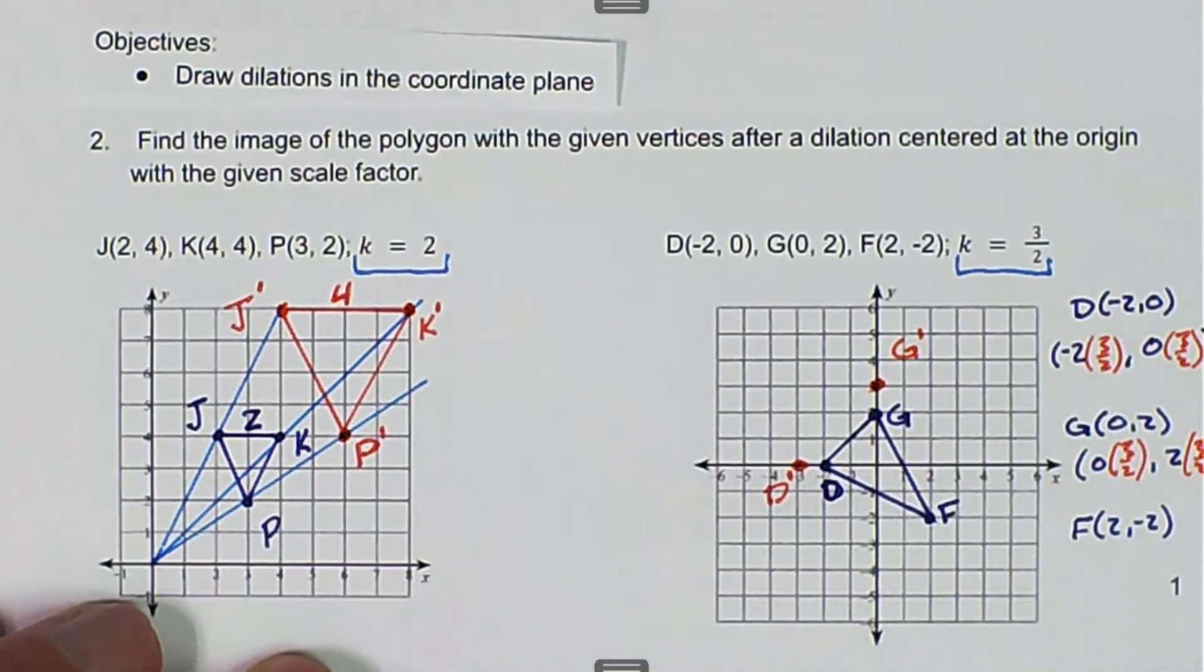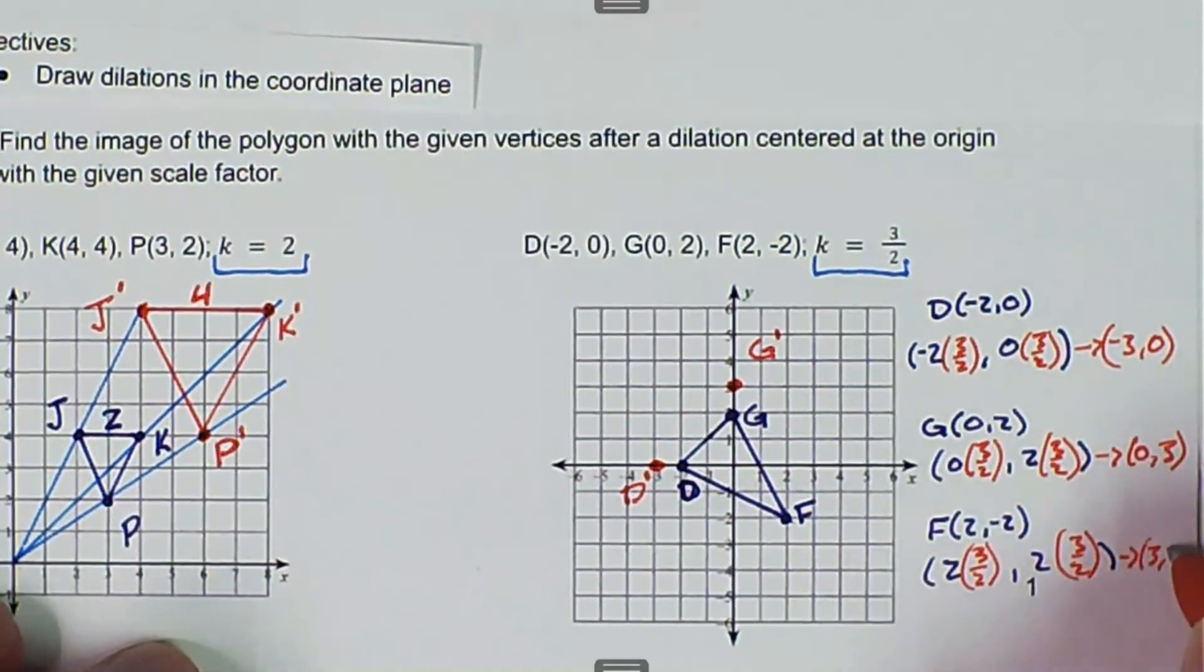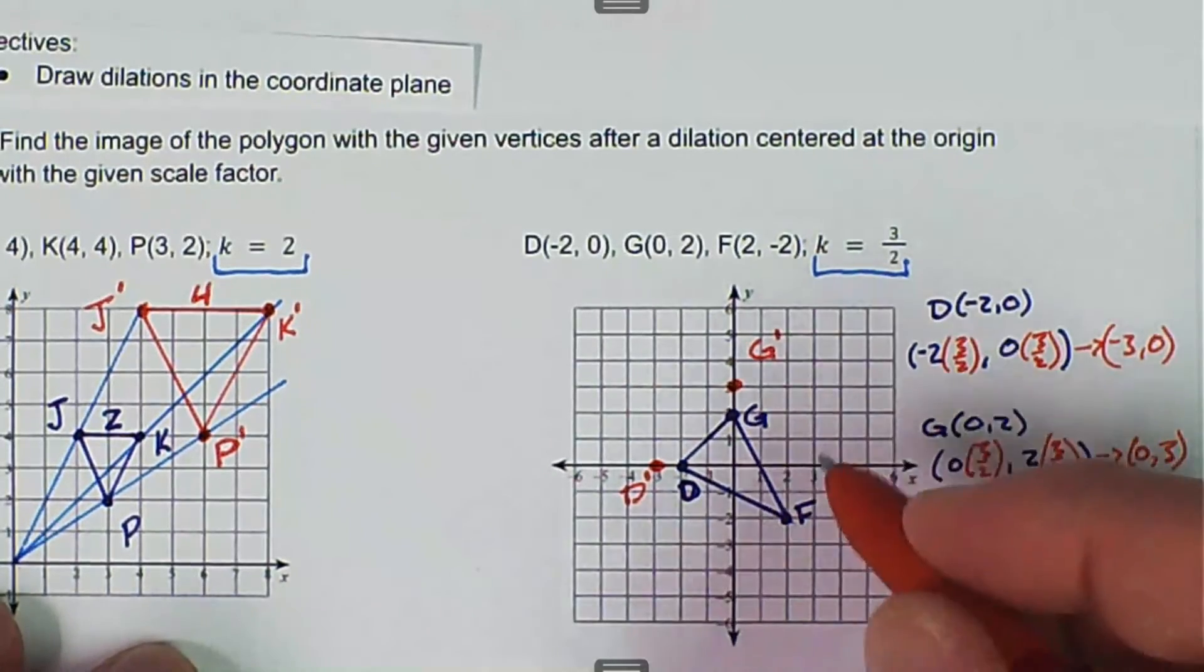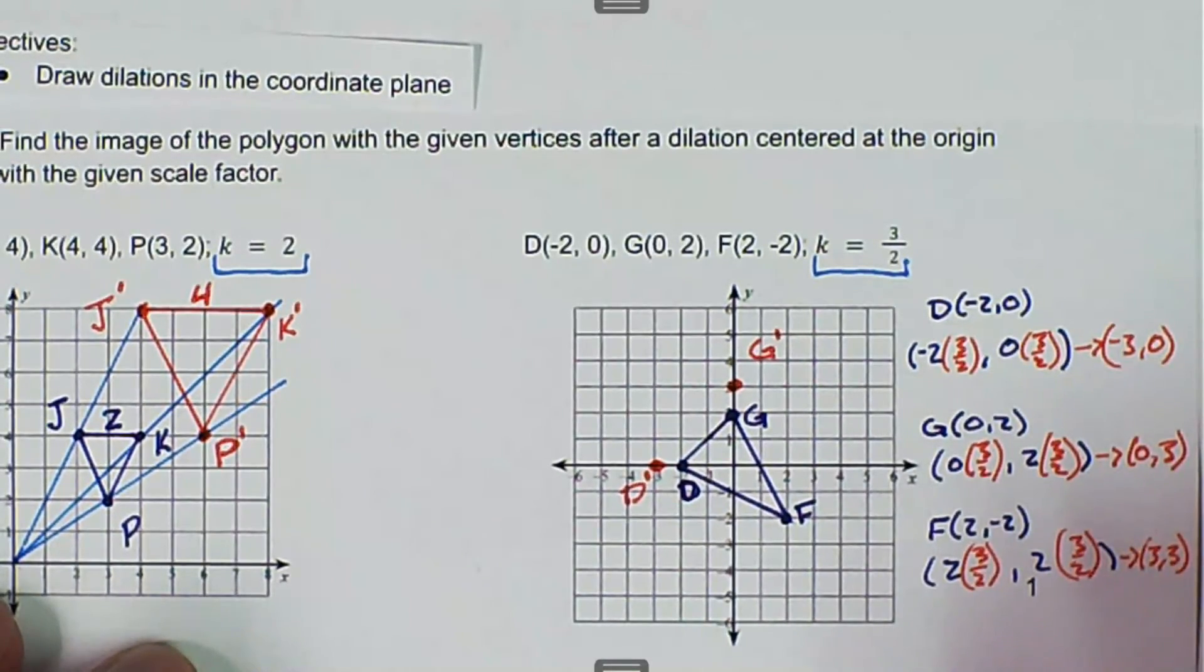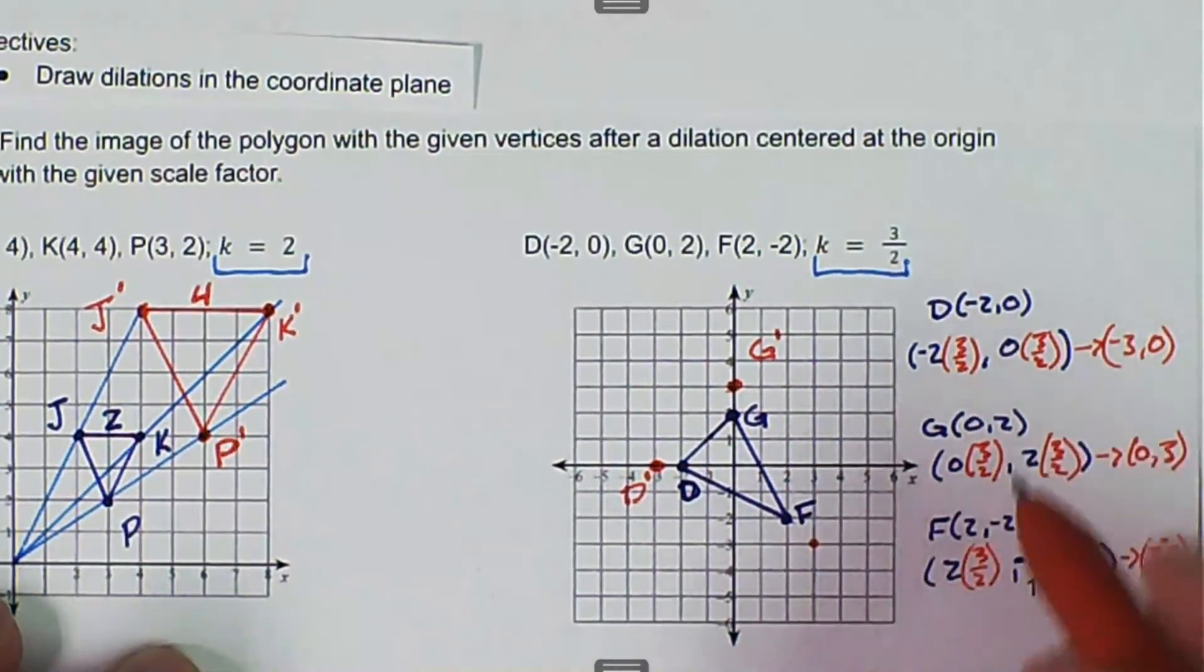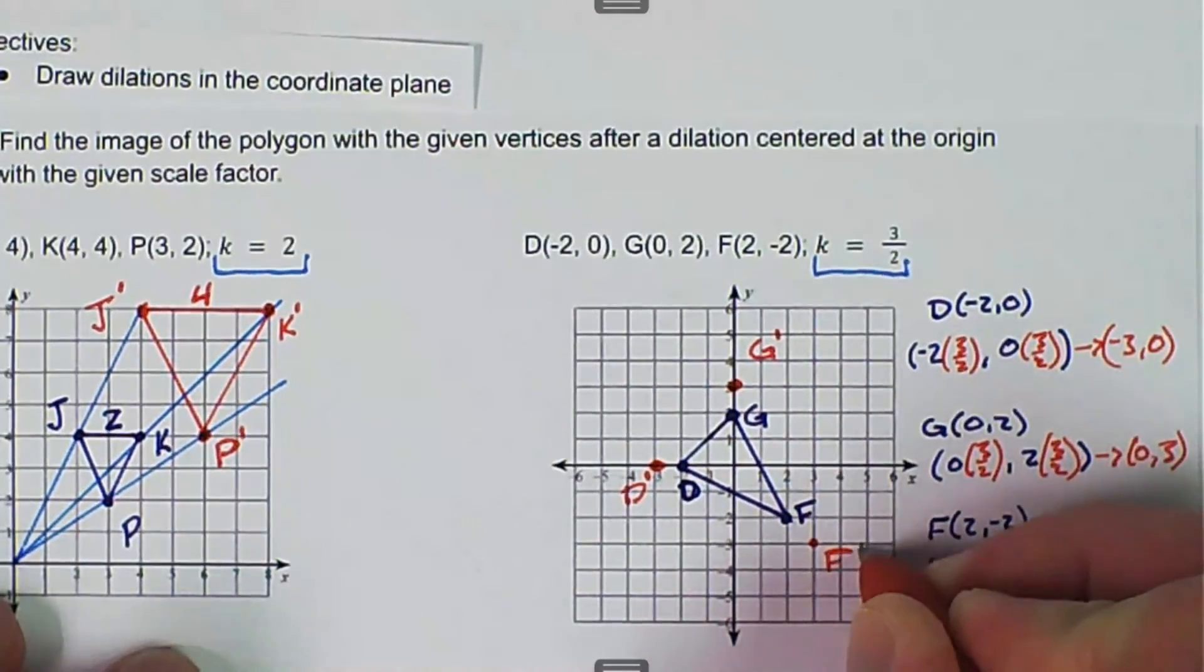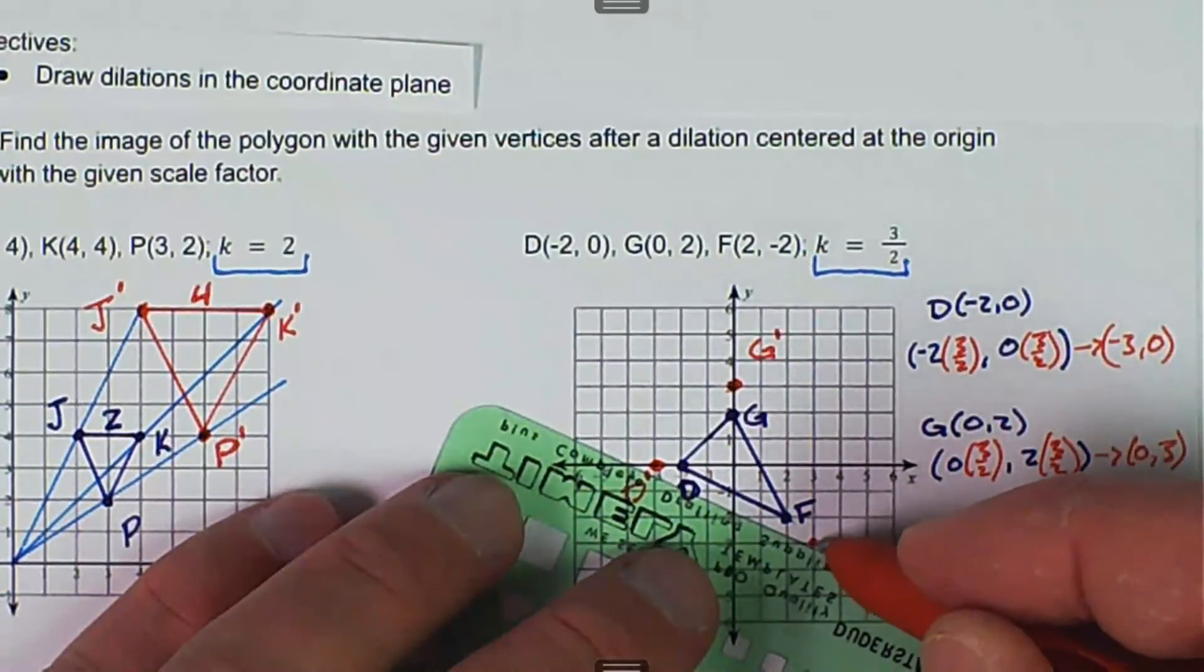And then the last, we have our X value and our Y value. And we're going to multiply by 3 over 2. Again, our 2's cancel and we're left with 3. Oh, that should have been a negative 2. I wrote it down wrong. So this should be negative 2. So this should be negative 3. And that's going to be F prime. And then I'm going to connect the dots.